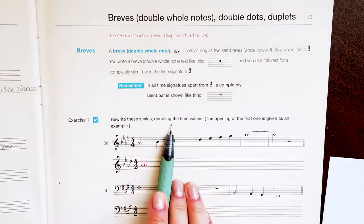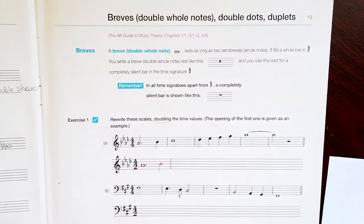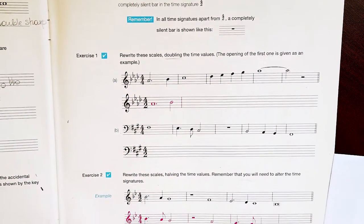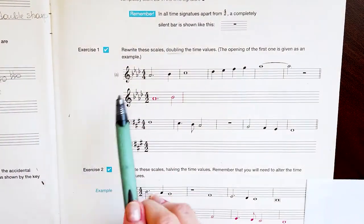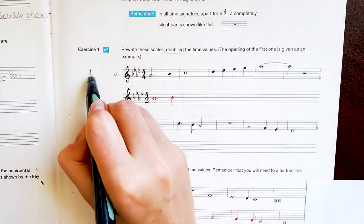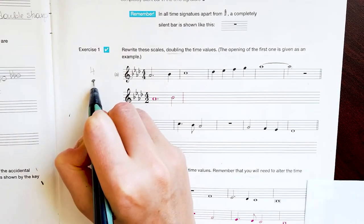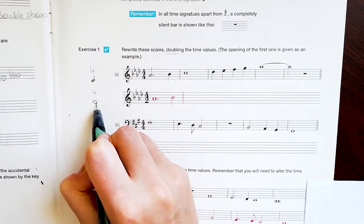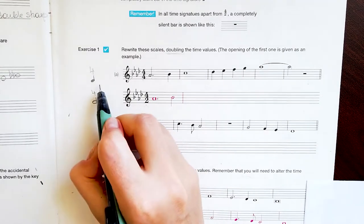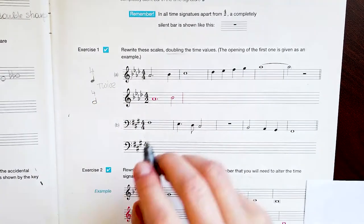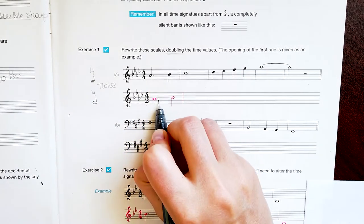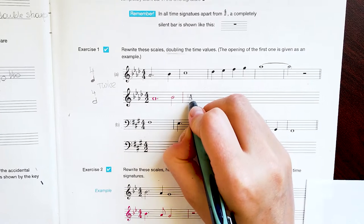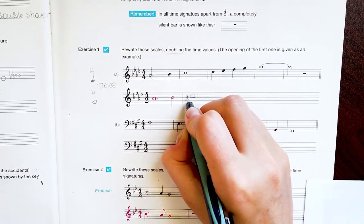Let's try the next exercise — we have to double the time value. Our time signature is 4/4. Four-four tells us there are four crotchets in a bar; four-two tells us there are four minim beats in a bar. So we have to make values twice as big — for example, a dotted semibreve becomes a dotted breve note with the two vertical lines.